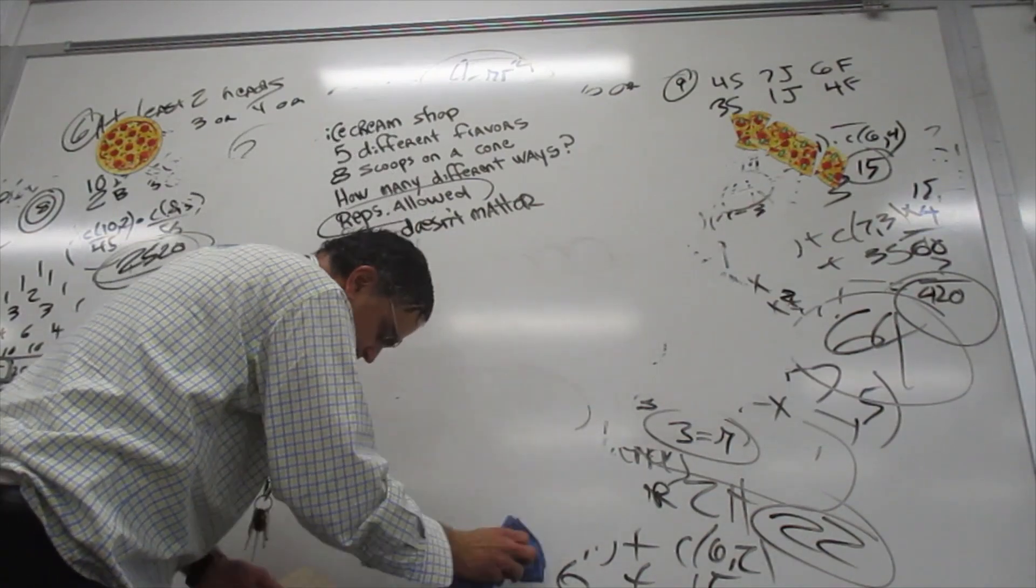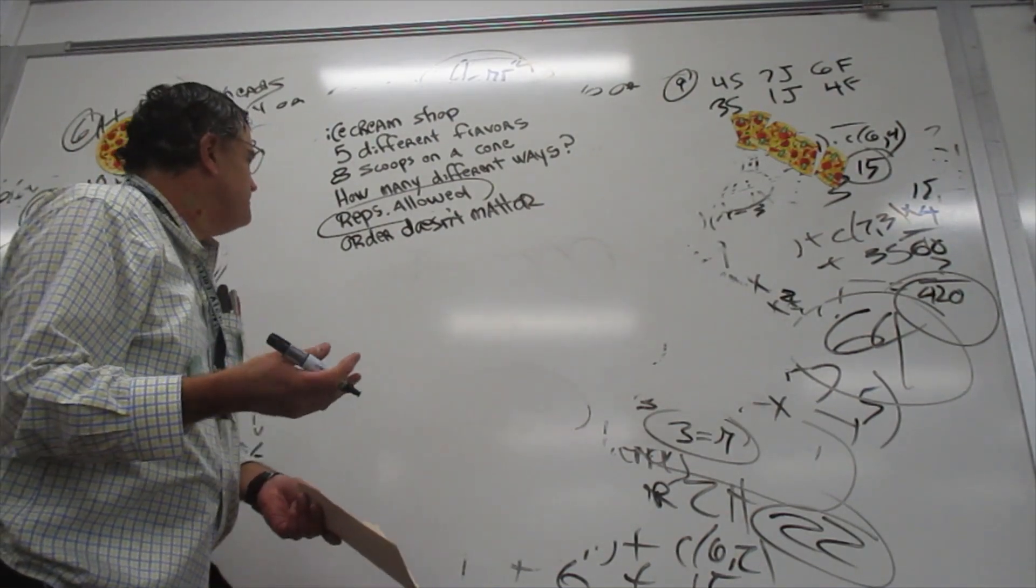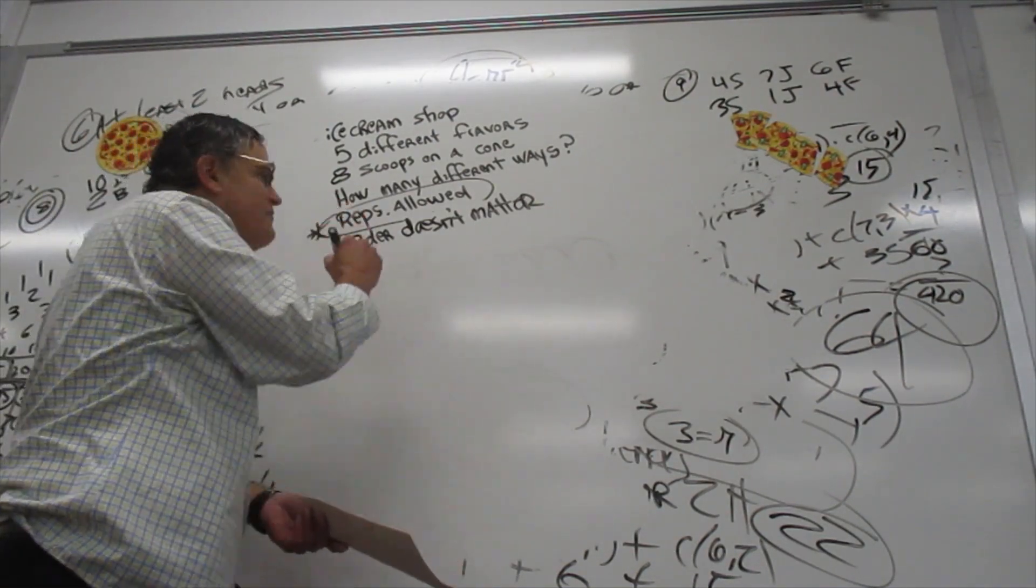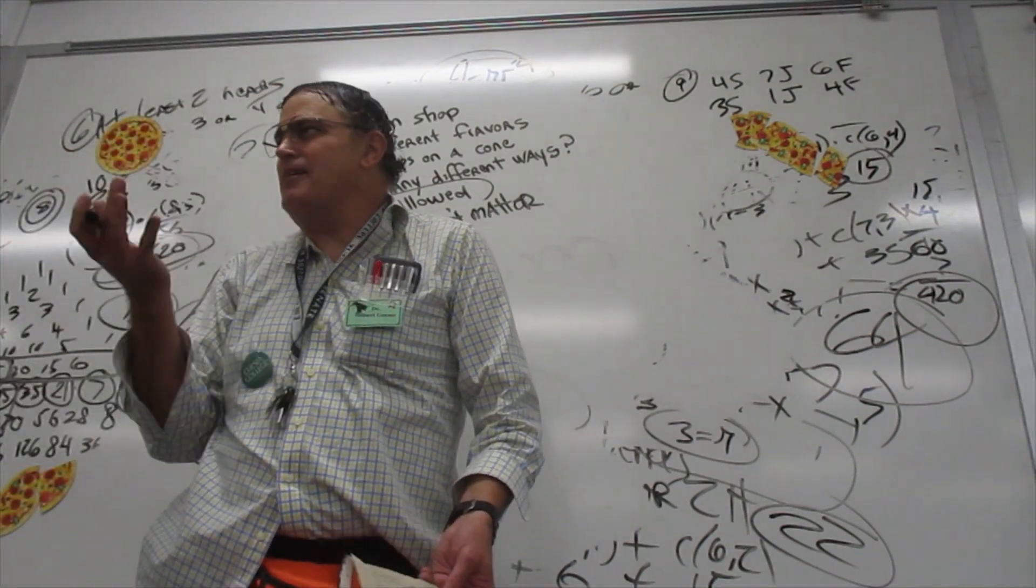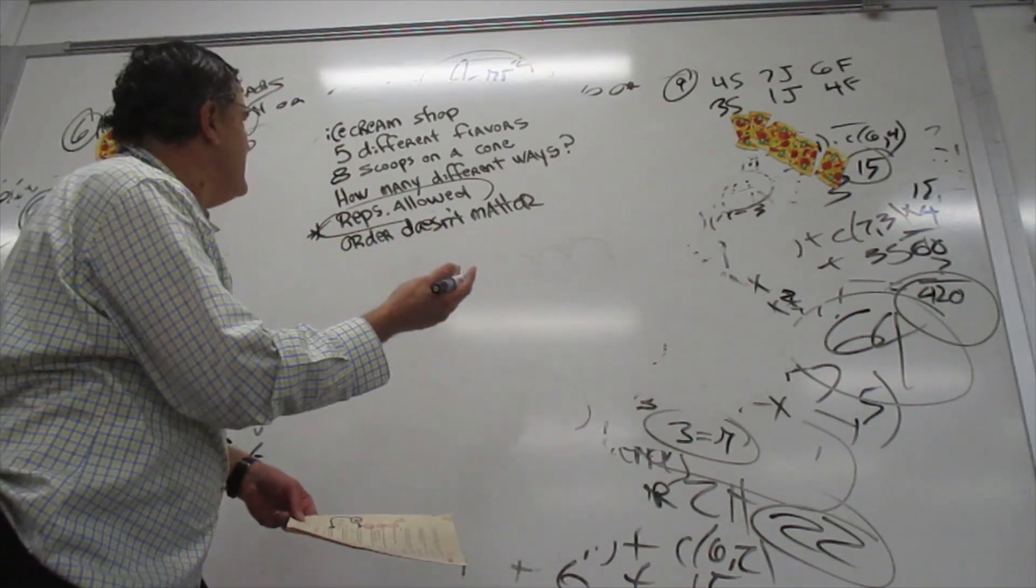Order doesn't matter means this is a combination, but this is a combination where reps are allowed. We've never done this. And this maybe does not belong in a Math for the Humanities class, but I'm going to go ahead and do this anyway.